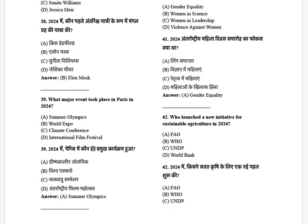What major event took place in Paris in 2024? The options are: Summer Olympics, World Expo, Climate Conference, and International Film Festival. The answer is Summer Olympics.